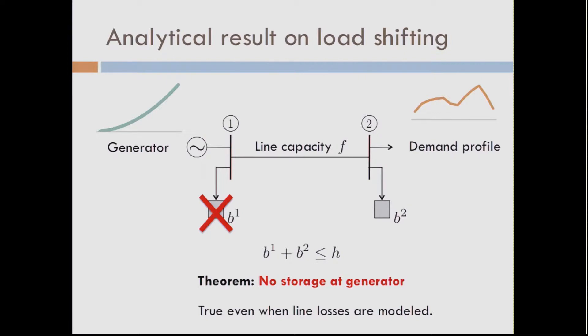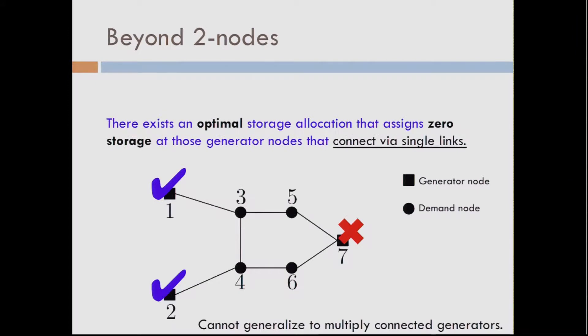So now we try to push this beyond the two-node networks, because that's not a very realistic depiction of what a power system looks like. So we have a little bit of a story. It gives a partial answer, that is any generated node that links to the rest of the network with one link, you can say the same thing. But with multiple ones, it is not true. We have a counterexample to show that it's not always the case that you don't need any generation. So it provides a partial answer, not a full answer. But remember that this is quite a general theorem, irrespective of the demand profile, irrespective of the line capacity, it holds. Our hope would be to see what happens if you can restrict these demand profiles to certain classes.